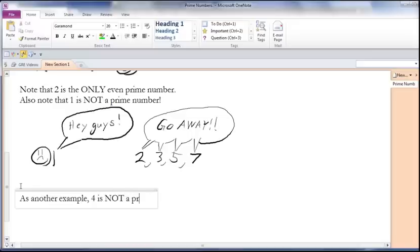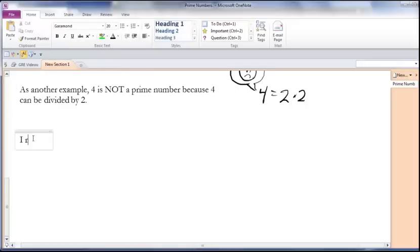As another example, 4 is not a prime number because 4 can be divided by 2. I recommend memorizing the list of prime numbers up to 100.